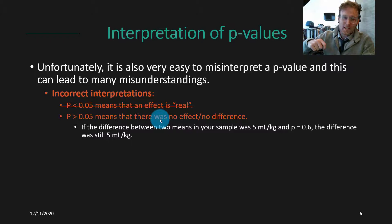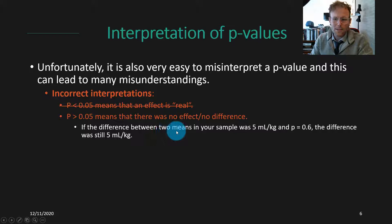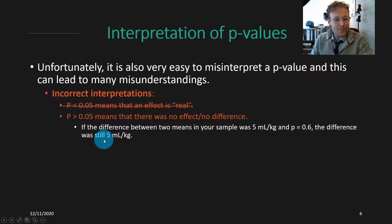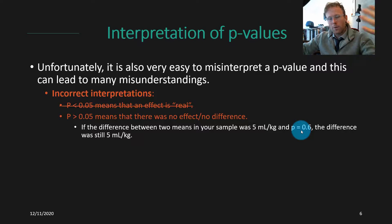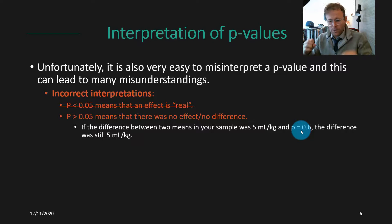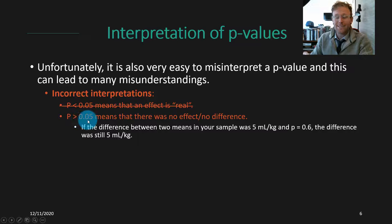Similarly, people make the reverse mistake and assume that if p > 0.05, there was no effect or no difference. For example, if you get a difference between two group means of 5 milliliters per kilogram — measuring oxygen uptake under two treatment conditions — and you get a p-value of 0.6, that's a pretty big p-value and very compatible with the null hypothesis, but the difference was still 5 mL/kg. You didn't find no difference. It's critically important to remember that a p-value greater than 0.05 and a result being 'not statistically significant' does not mean there's no effect or difference in the data.